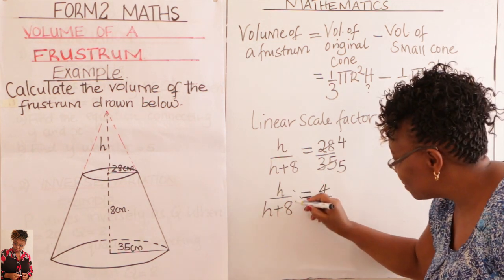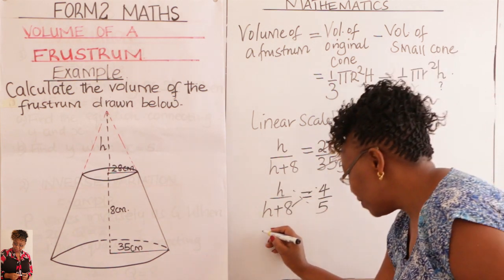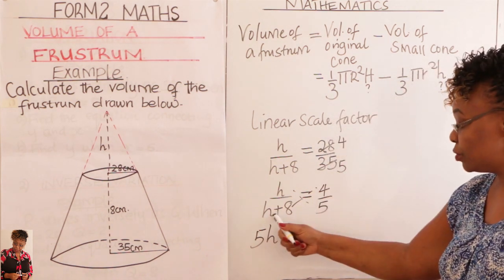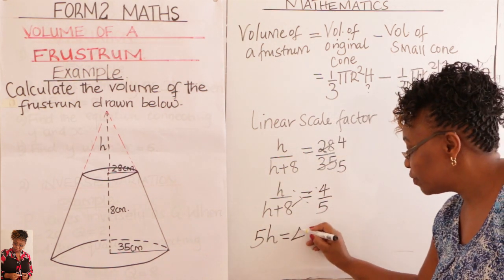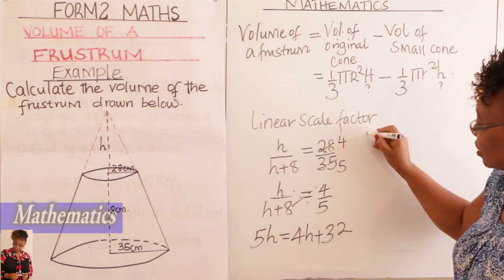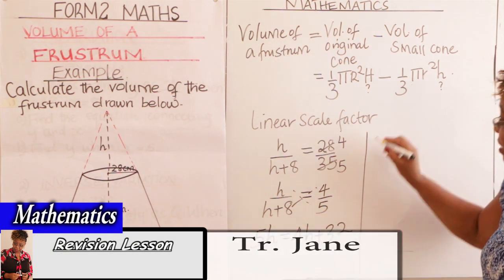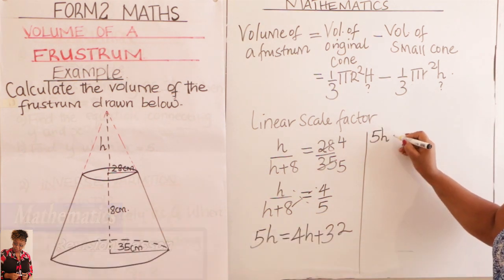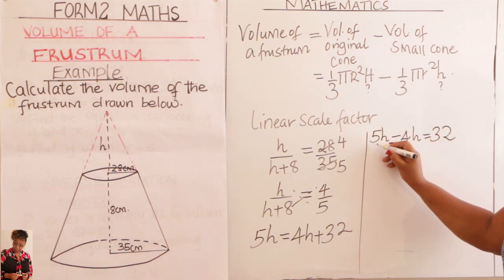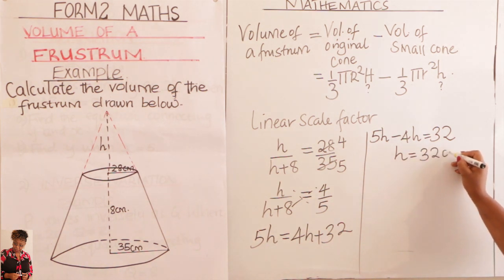Cross multiply this. This will give you 5h equals to, multiply this by 4, 4h plus 32. So you take this to the other side. You get 5h minus 4h equals 32. And therefore you subtract this, you get h equals 32 centimeters.